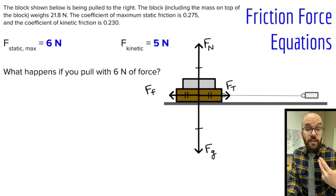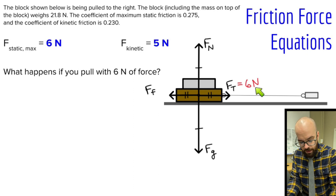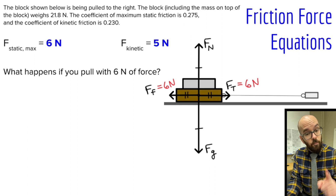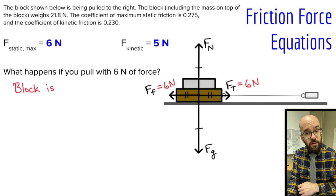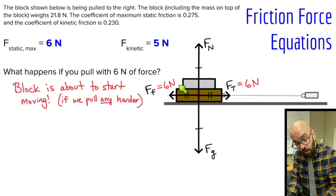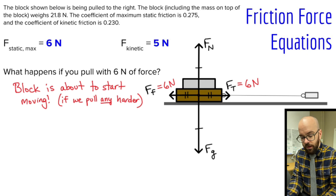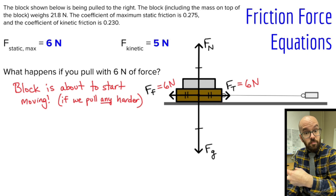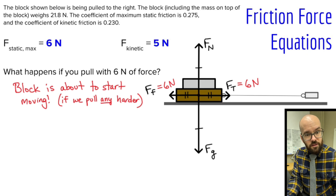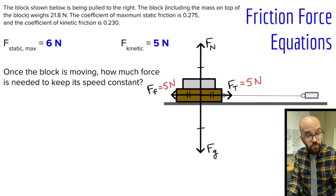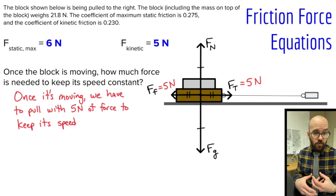What happens if we pull with 6 newtons? That is equal to our maximum static friction. If we're pulling at exactly 6 newtons, there can be 6 newtons of static friction — but we've reached the point where if we pull any harder at all, the block is going to start moving. If we pull with 6.01 newtons, the block starts moving. And once it does start moving, the friction jumps down to only 5 newtons of kinetic friction. That's why when you start to pull something, it kind of jerks — it takes more force to get it started than to keep it going at constant speed. Once the block is moving, we need to pull with 5 newtons of force to keep its speed constant.